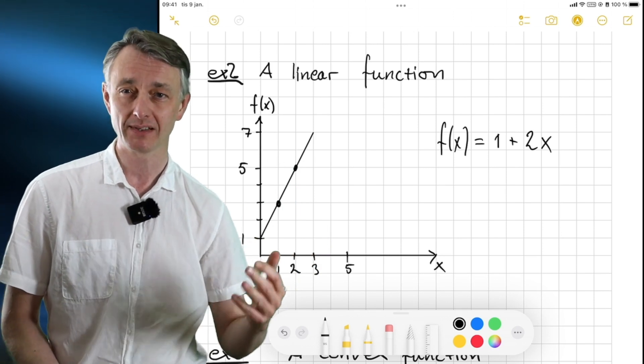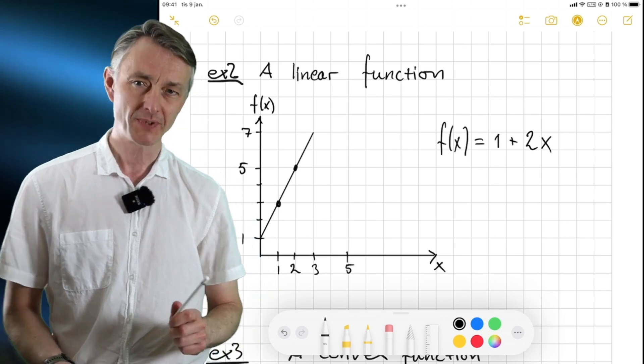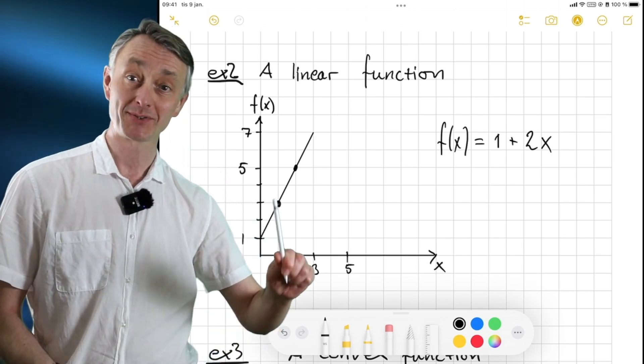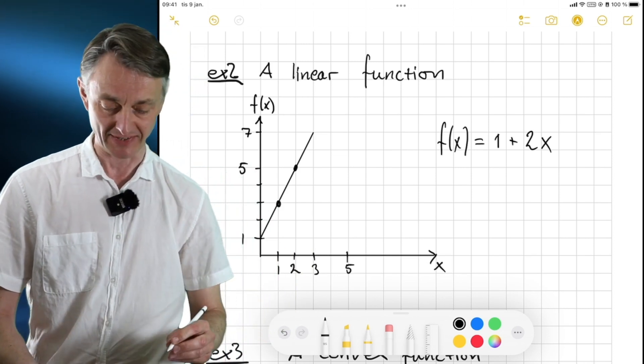Now you're starting to have a feeling of what the slope might be. Probably when we go 1 step to the right, we go 2 steps up. So the slope should be plus 2, right? Let's check now and see if that is the case.